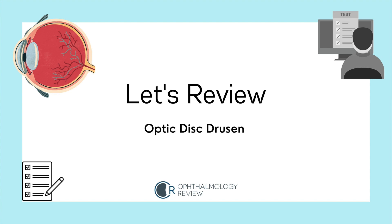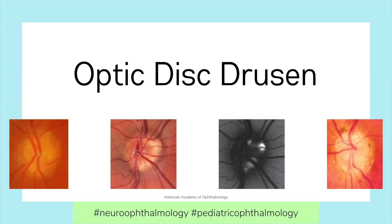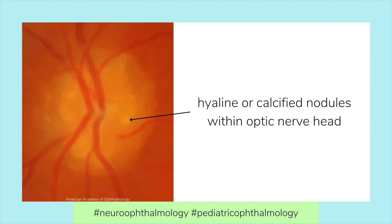Let's review Optic Disc Drusen. Optic Disc Drusen are hyaline or calcified nodules within the optic nerve head. They are theorized to be a product of intraaxonal mitochondrial damage from impaired axonal transport and metabolism.